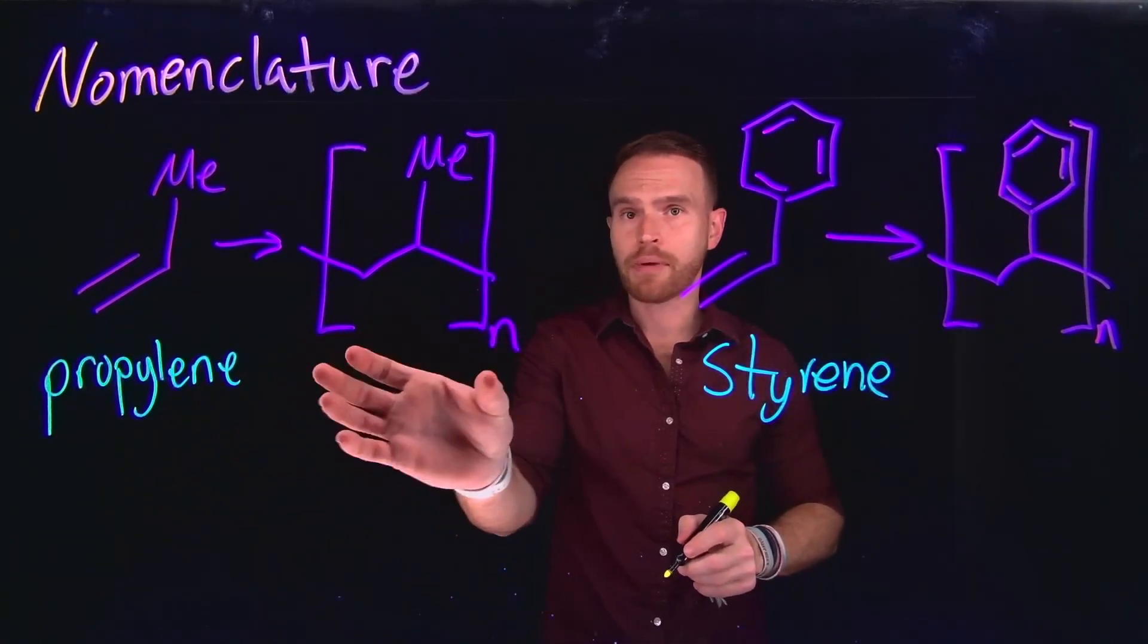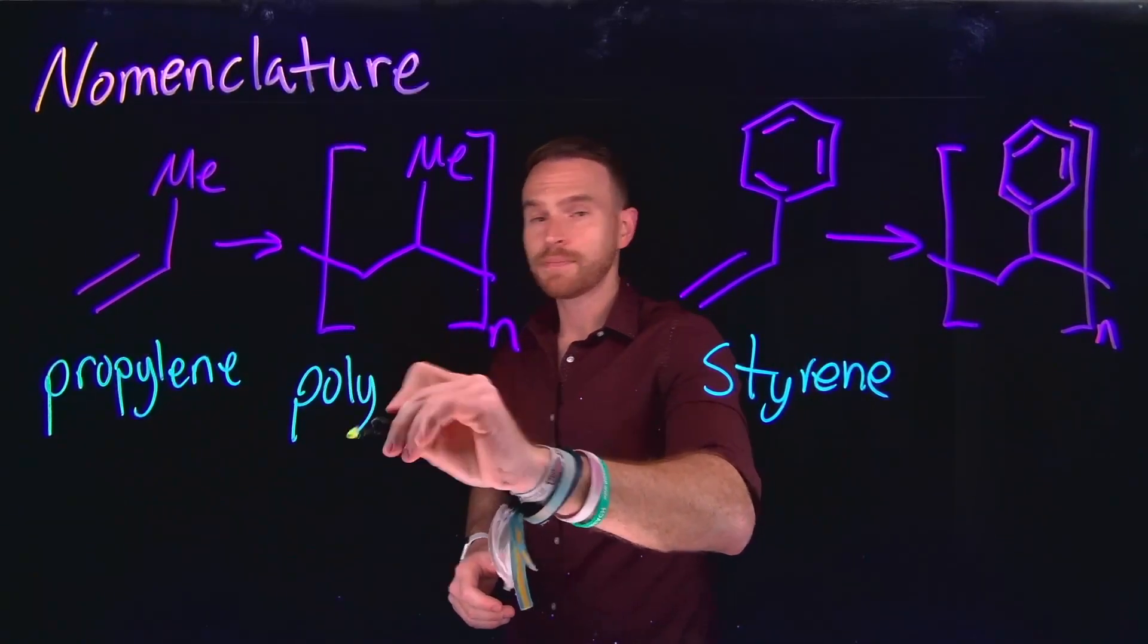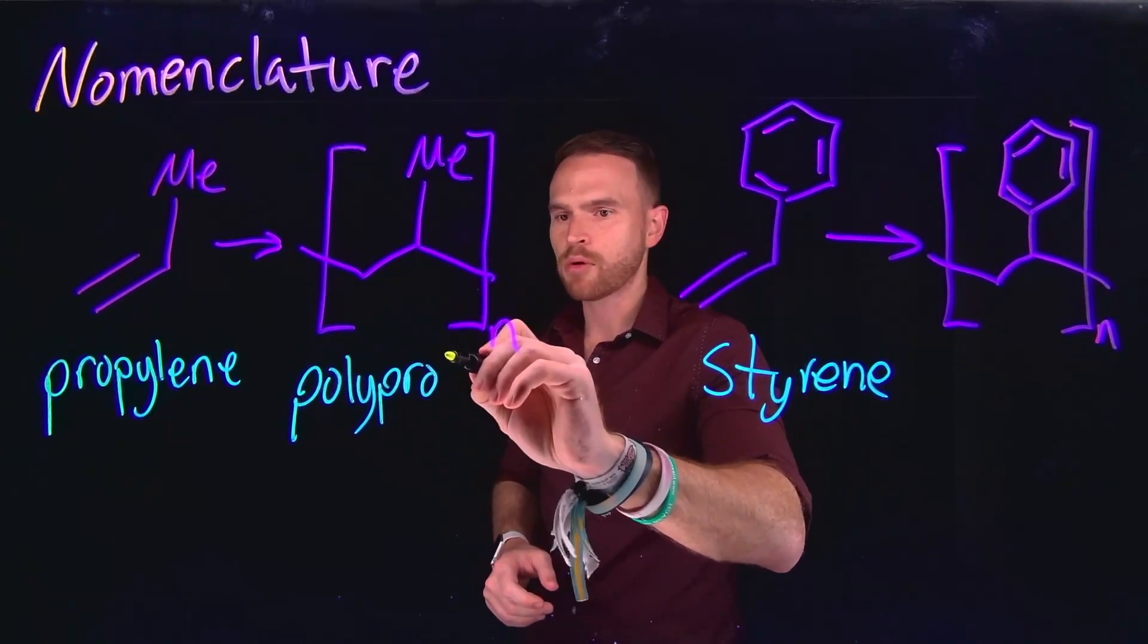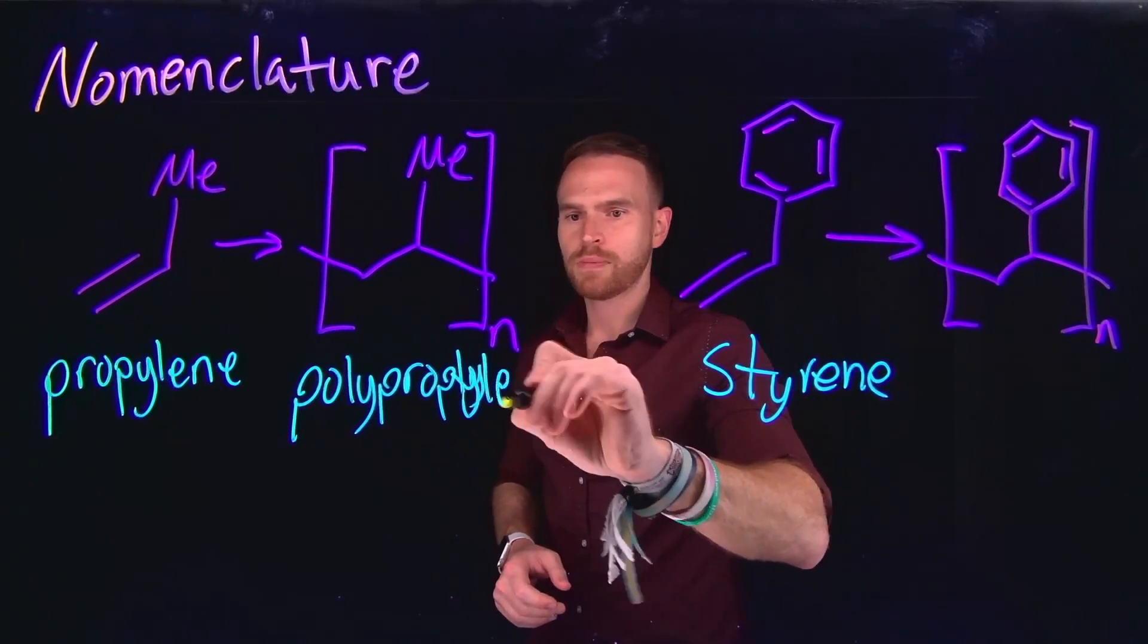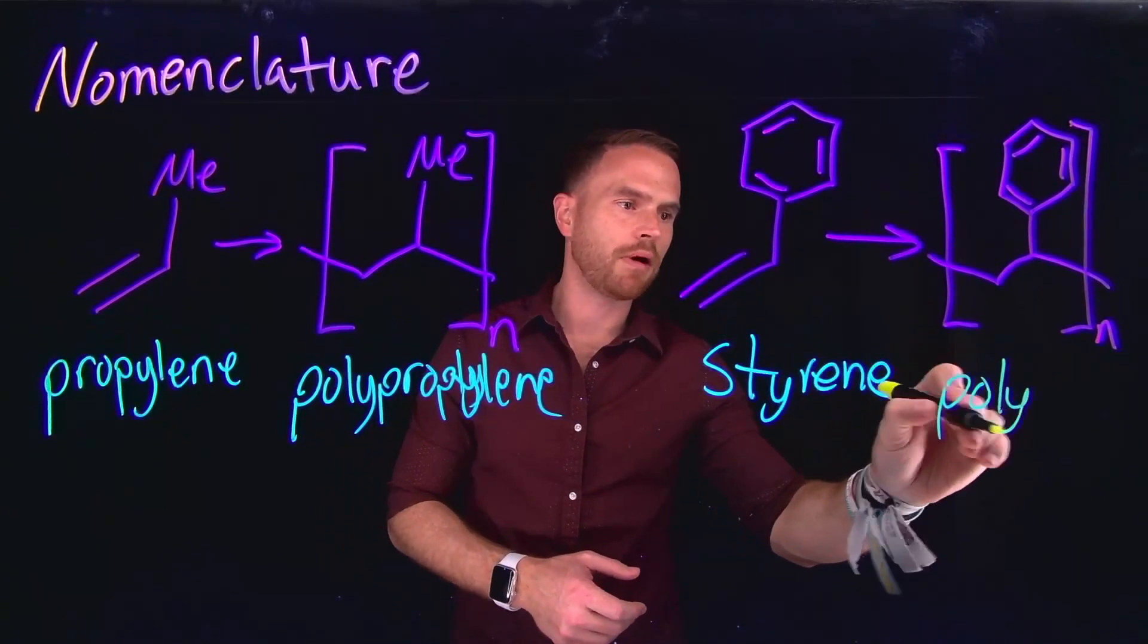Therefore, when we go to name the polymer version of these individual polymers, we would call this poly and then write the rest of the name. So in this case it would be polypropylene. And in the case of the styrene derivative, this would be polystyrene.